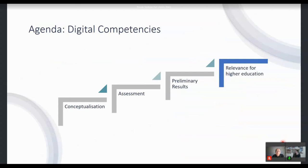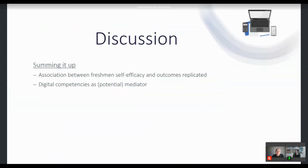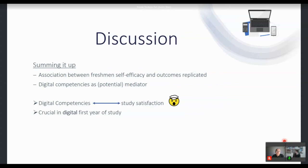In the discussion, we would like to summarize our findings and talk about relevance for higher education, practical implications, and some outlook ideas. We were able to partially replicate associations between freshman self-efficacy and several outcome variables, and could show that digital competencies might serve as a mediator — especially for student satisfaction. What was striking in our data is the negative path from self-reported digital competencies to student satisfaction. One possible explanation: students at the start of their higher education may have overestimated their actual digital competencies.